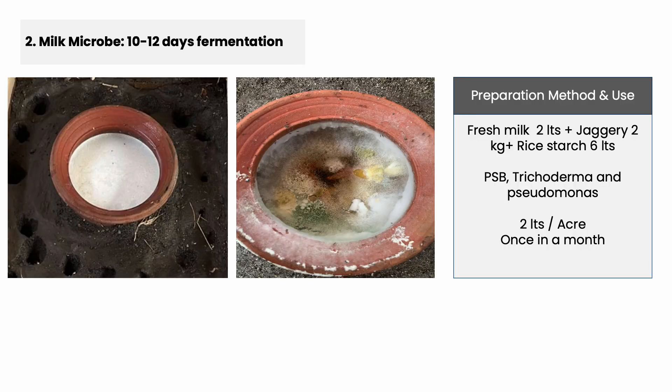First is the cover cropping. Second, we use milk microbes. We take fresh cow milk, jaggery, and rice starch, ferment for about 10 to 15 days, and we get a lot of regular plant-hormone-producing microbes and beneficial bacteria. This is a proven technique. We use KVK Tunkur to validate through soil testing.